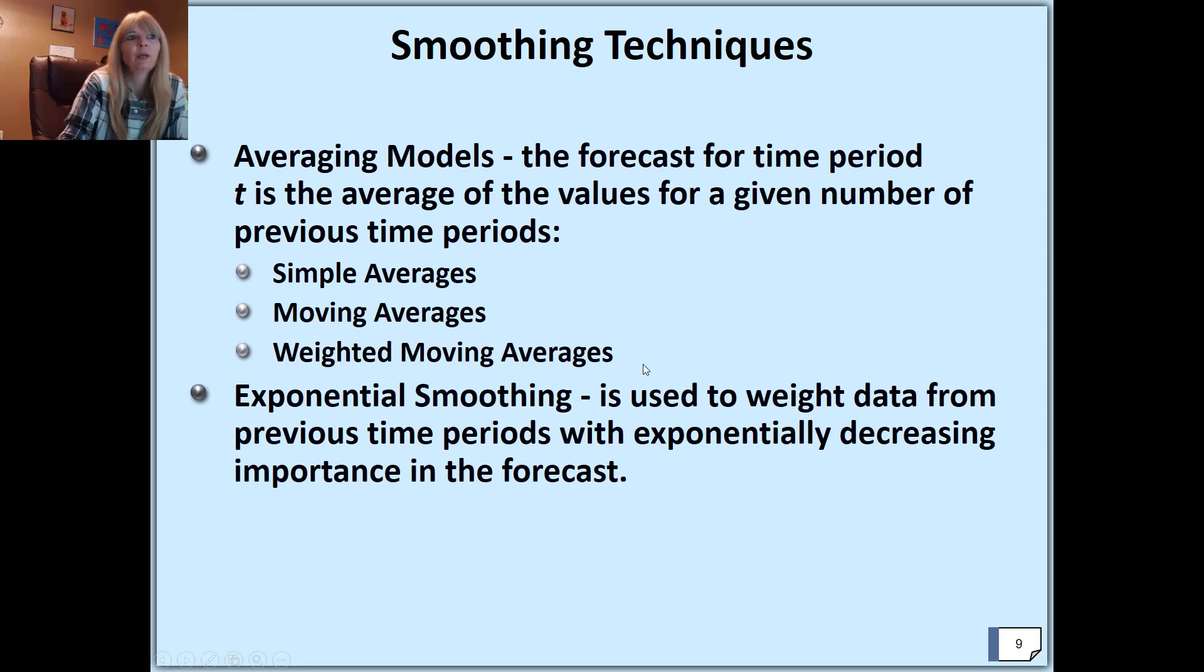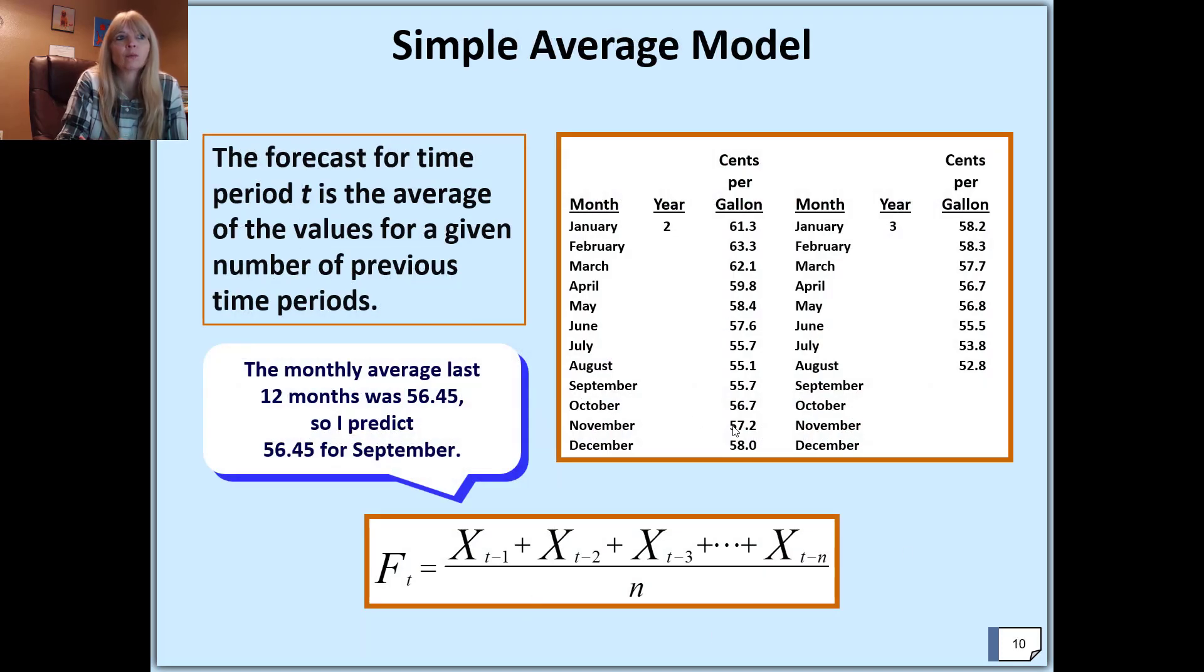versus weighted moving averages, and then even exponential smoothing. A simple average is what you already know, where you take the data, add up the data values, and divide by however many values you have. These subscripts t minus one represent time—in this case, months. So the previous month, two months ago, three months ago, and so on. With the simple average, you could forecast August based on just averaging all the ones before. That's why it's simple.